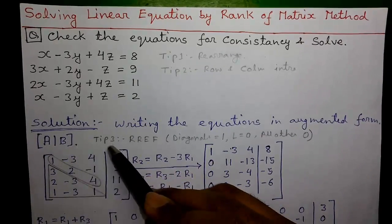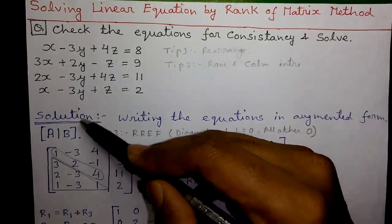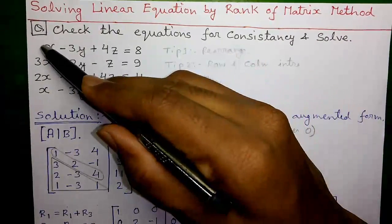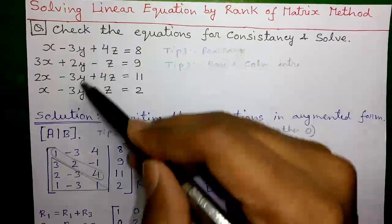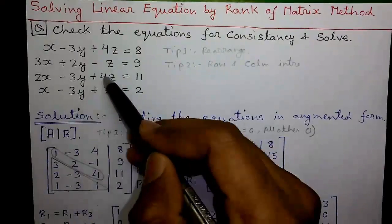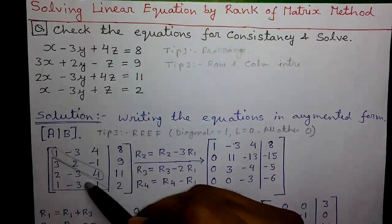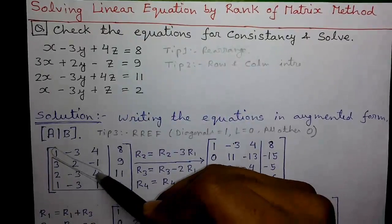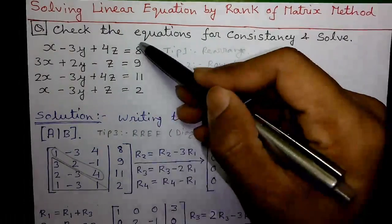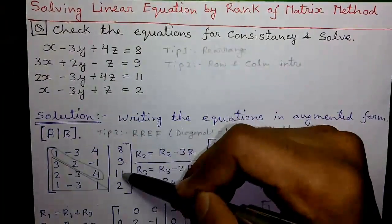So let's put it to the solution. Writing the equations in augmented matrix form [A|B]. Matrix A is obtained by writing all the coefficients from the left-hand side of the equations: 1, -3, 4 / 3, 2, -1 / 2, -3, 4 / 1, -3, 1. And B is the right-hand side constants: 8, 9, 11, and 2.